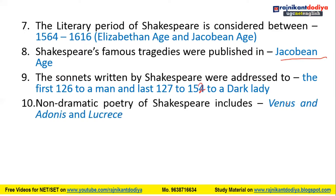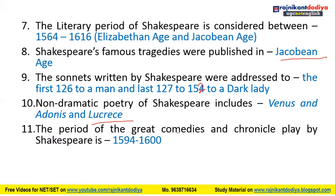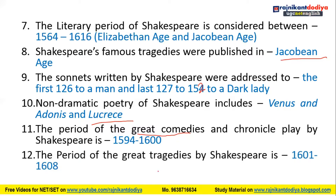The non-dramatic poetry of Shakespeare includes Venus and Adonis and Lucrece — two poems written by Shakespeare. The period of the great comedies and chronicles plays by Shakespeare is 1594 to 1600, during which his comedies and chronicle plays were written.